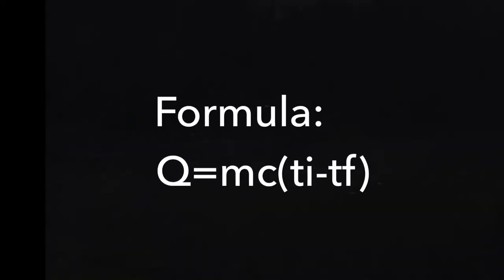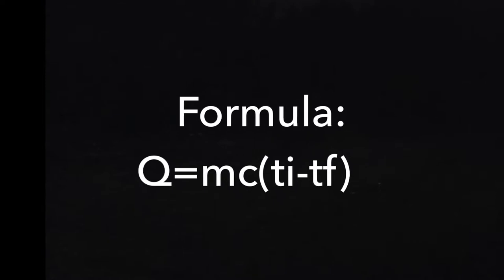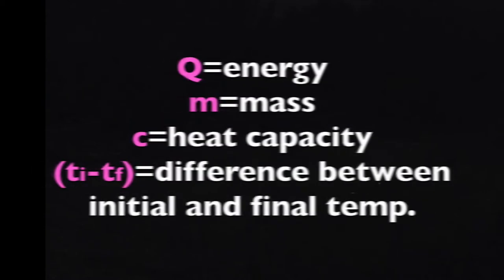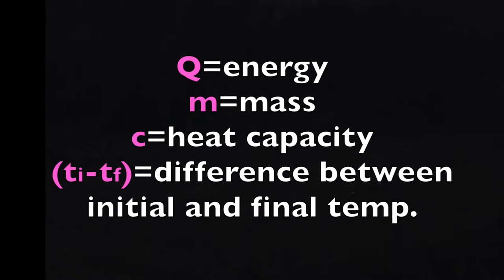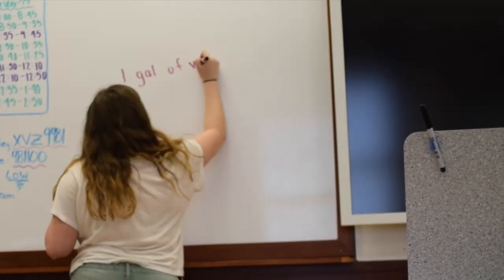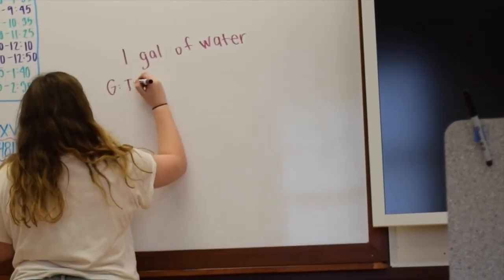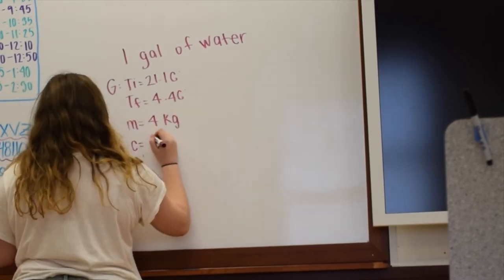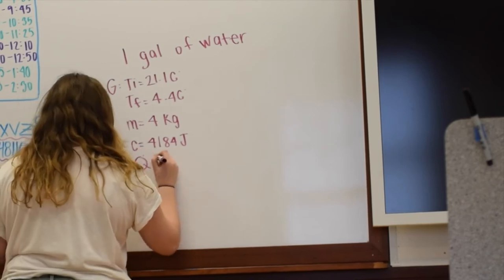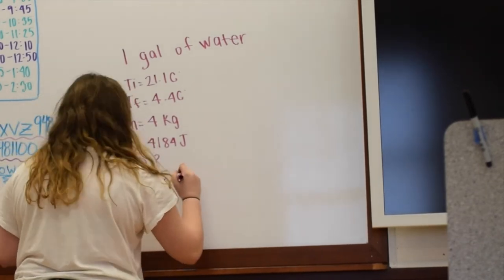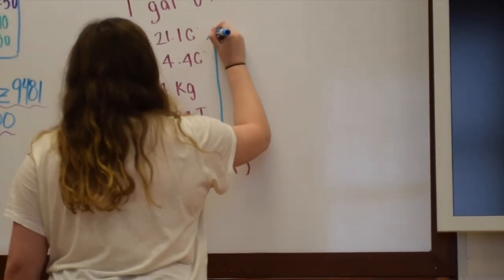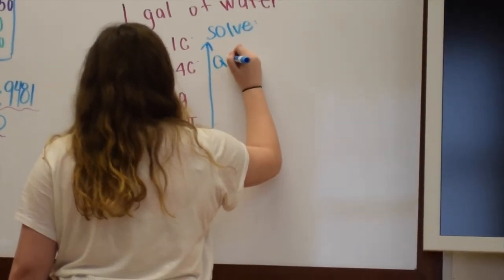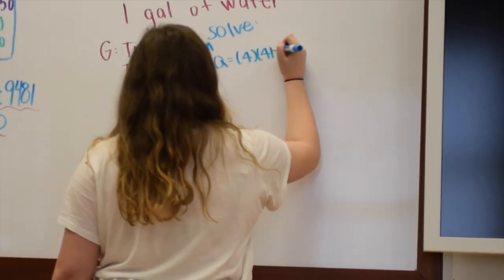This problem can be solved by using the formula Q equals MC times Ti minus Tf, where Q is the energy, M is the mass, C is the heat capacity, and the difference between the initial temperature and the final temperature is at the end. After writing out all of the necessary information, you can plug these values into the equation to solve for the energy, which will be represented in joules.